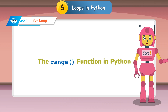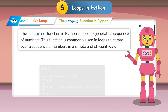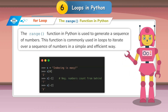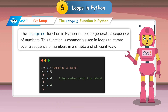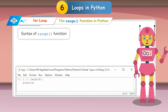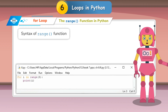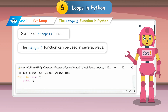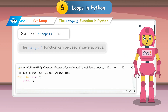The range function in Python is used to generate a sequence of numbers. This function is commonly used in loops to iterate over a sequence of numbers in a simple and efficient way. The range function can be used in several ways.